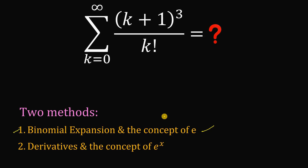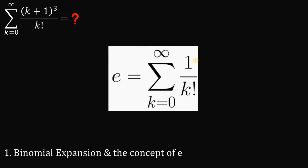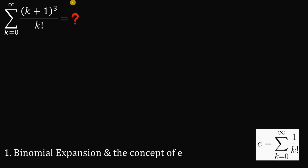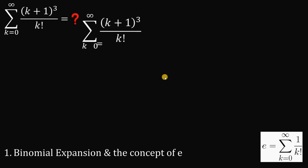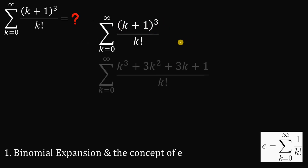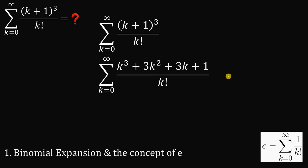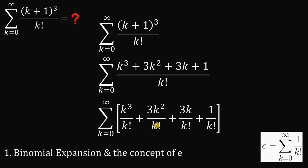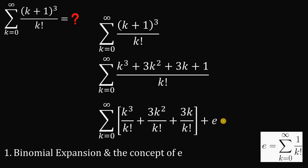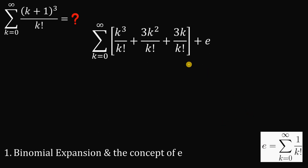Using the binomial expansion and the concept of e: we know e is equivalent to the summation of 1 over k factorial from k equals zero to infinity. We will expand (k+1)³ as k³ + 3k² + 3k + 1. Using similar fractions, we can rewrite this as k³/k! + 3k²/k! + 3k/k! + 1/k!, where the last term sums to e.